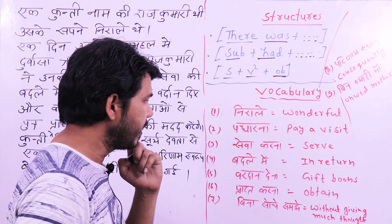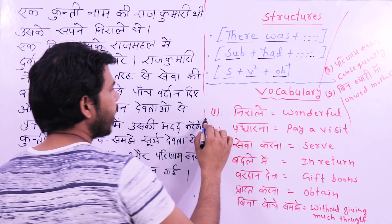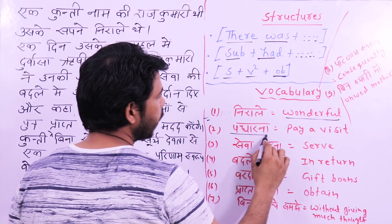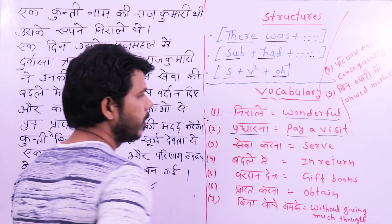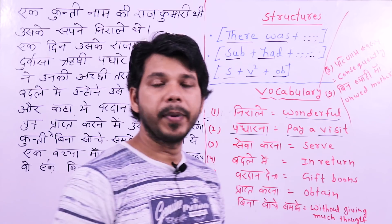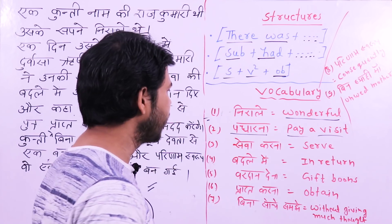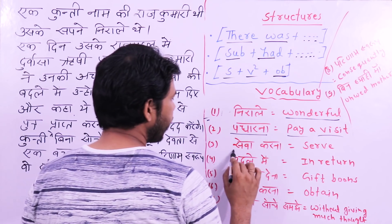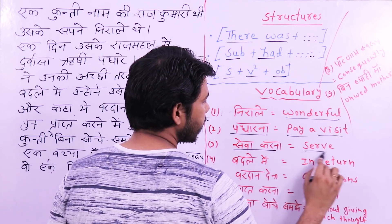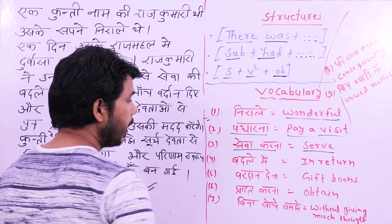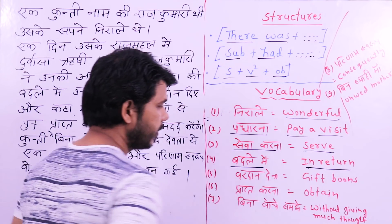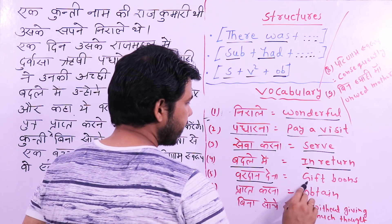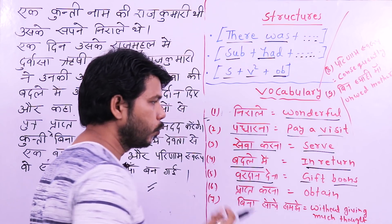Let's look at the vocabulary. निराला — the wonderful dreams — so निराले means 'wonderful.' पधारना — you say 'paid a visit.' Pay का second form is 'paid,' so 'paid a visit.' You can also say 'came' — that's also fine, but 'paid a visit' is a good phrase. सेवा करना — this means 'serve.' Serve means सेवा करना. बदले में — this means 'in return.' वरदान देना — boon, gift boons. Boon means वरदान.